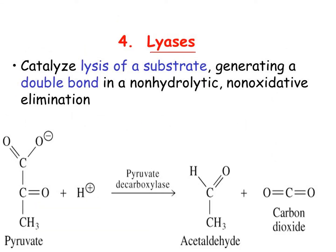The next category is lyases — enzymes that catalyze elimination reactions. In the example, pyruvate decarboxylase removes the carboxylate group from pyruvate and converts it into acetaldehyde plus carbon dioxide. So lyases eliminate a group to form a double bond or break a bond without hydrolysis.